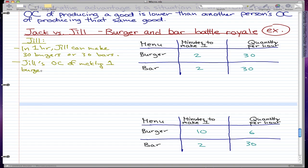So Jill's opportunity cost of making one burger is one bar, because opportunity cost is what you give up over what you get, and the ratio is the same, so it's one to one.